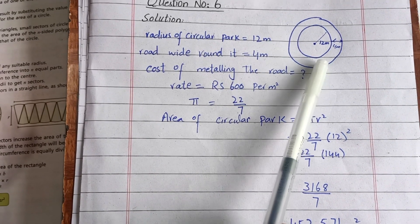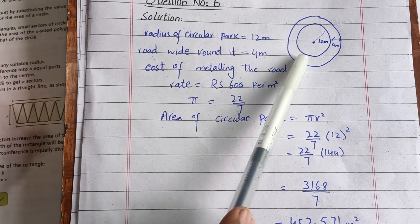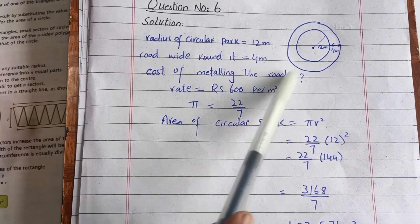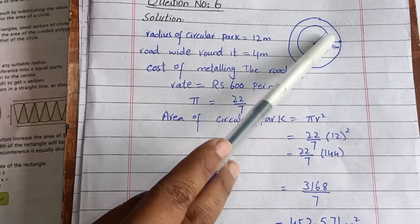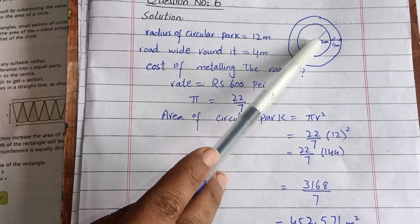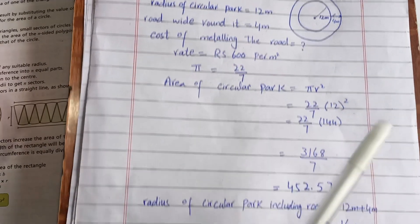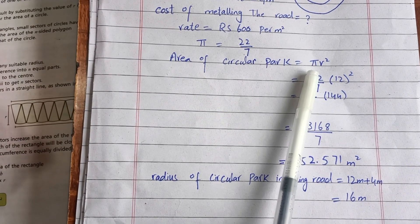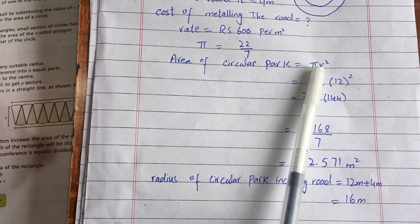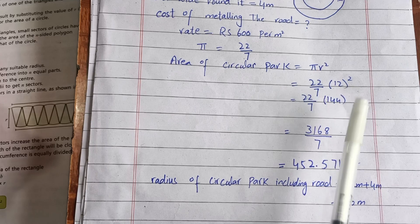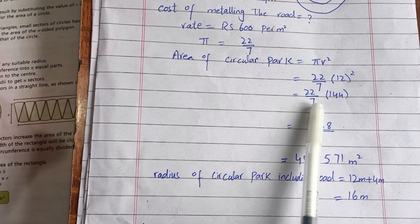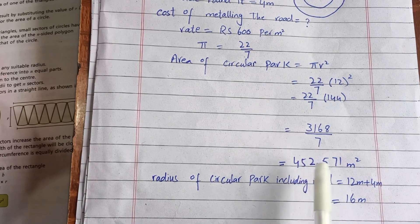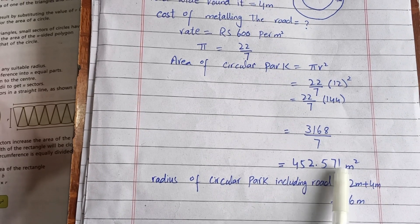First, we need to find the area of the inner circular park using the formula π r². Pi is 22/7 and r is 12, so r² = 144. Multiplying 22/7 × 144 = 3168 ÷ 7 = 452.571 square meters. This is the area of the circular park inside.